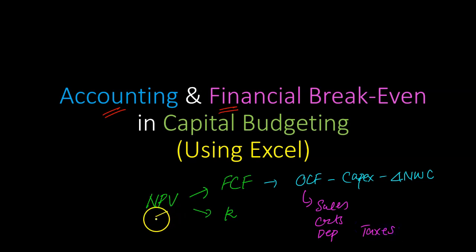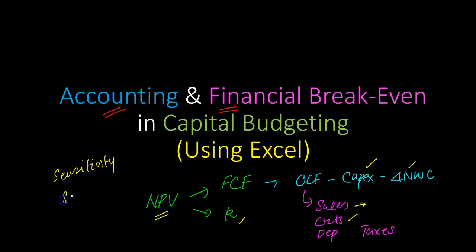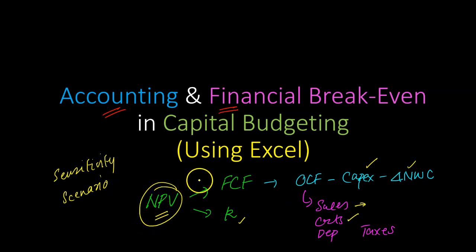Whenever we calculate the NPV of any project or investment, we recognize that NPV depends on the underlying inputs — what we're expecting sales to be, costs to be, capex to be, changes in net working capital, and our discount rate. Because these inputs can change, we typically do some sort of sensitivity or scenario analysis, asking: if our underlying inputs change, what will happen to the NPV?